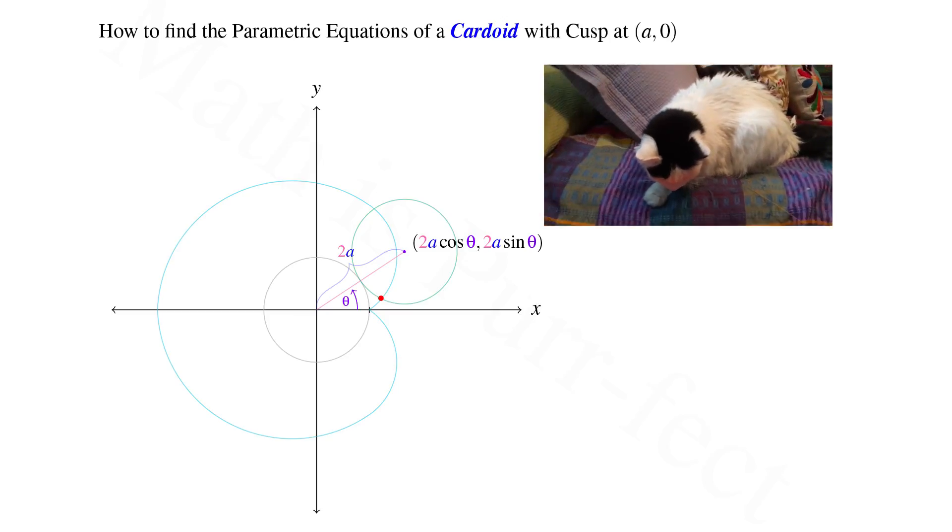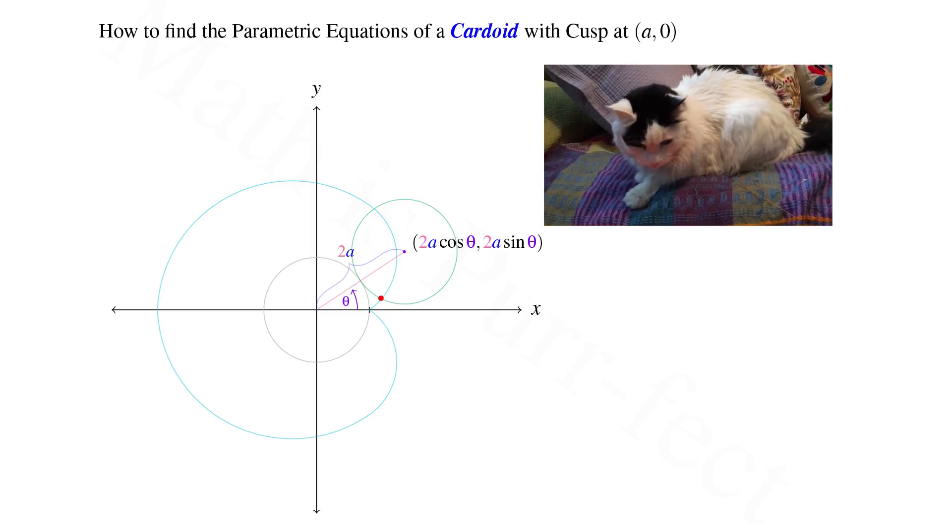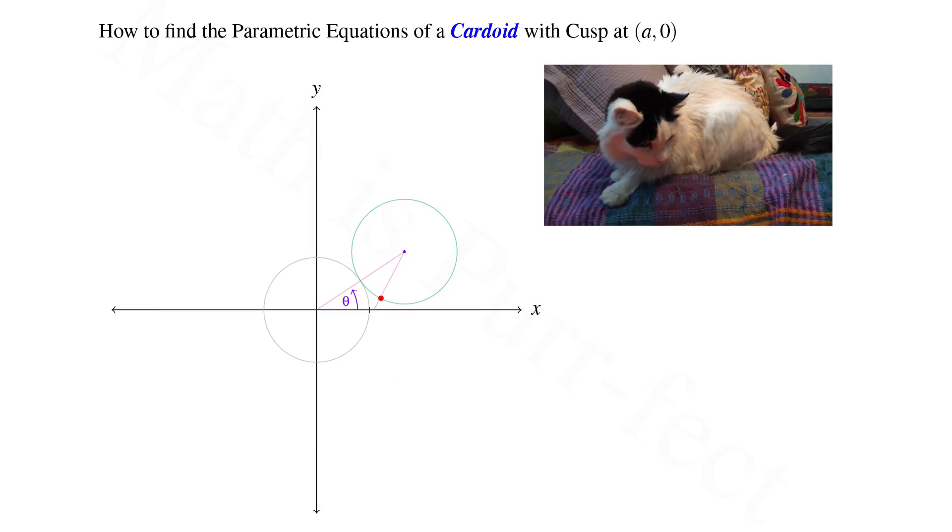Our goal now is to find the coordinates of the point on the cardioid, indicated in red, with respect to the angle theta.